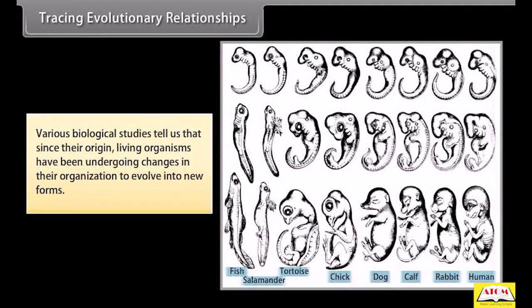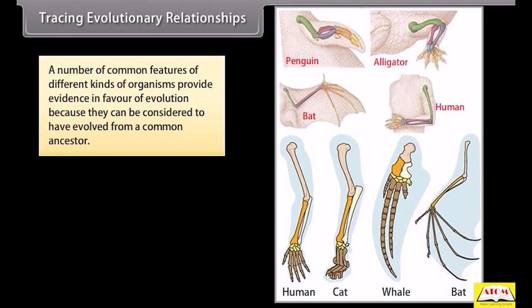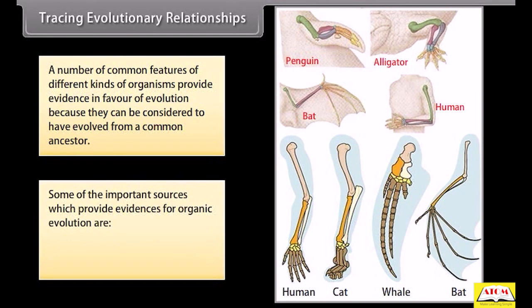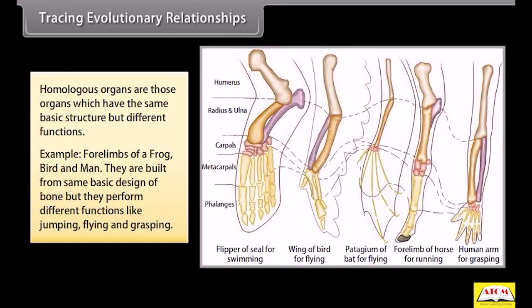Various biological studies tell us that since their origin, living organisms have been undergoing changes in their organization to evolve into new forms. A number of common features of different kinds of organisms provide evidence in favor of evolution, as they can be considered to have evolved from a common ancestor. Some important sources providing evidence for organic evolution are homologous organs and analogous organs. Homologous organs are those organs which have the same basic structure but different functions — for example, the four limbs of a frog, bird, and man, built from the same basic bone design but performing different functions like jumping, flying, and grasping.